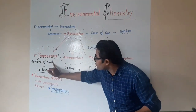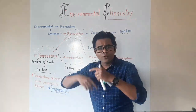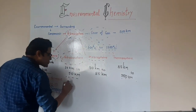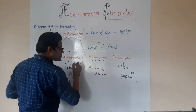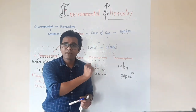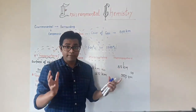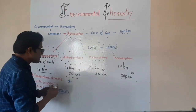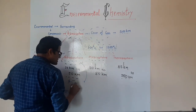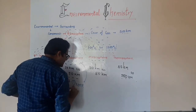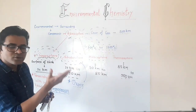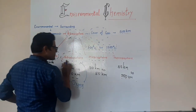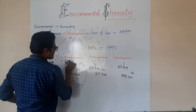As we move from the tropospheric region to the stratospheric region, the temperature again goes on increasing. An important aspect of the stratospheric region is that it contains ozone. Ozone is very important because it absorbs the ultraviolet radiations coming from the sun. Therefore, the stratosphere is also called the ozonesphere.